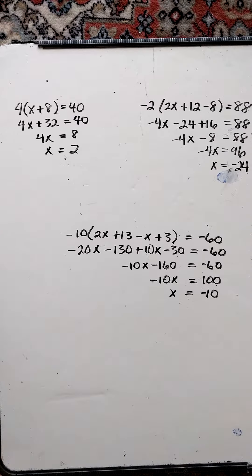I just want to show some examples of using distributive property and combining like terms. Here's the first example.